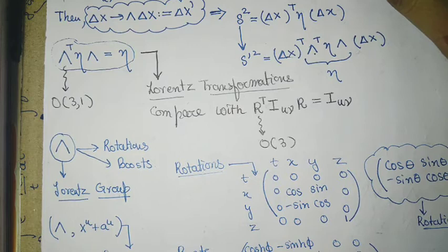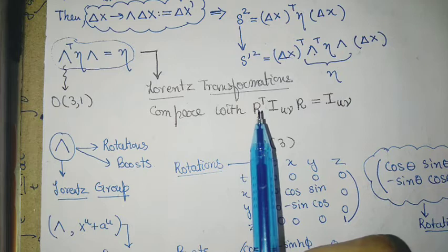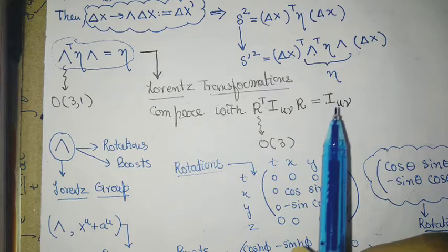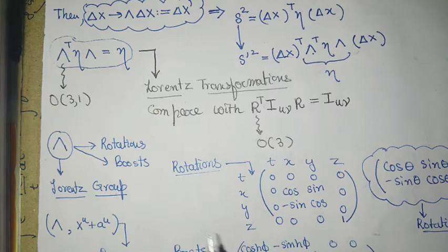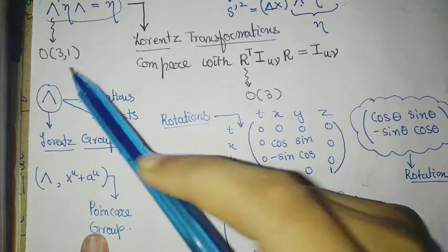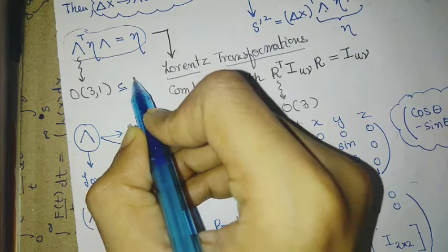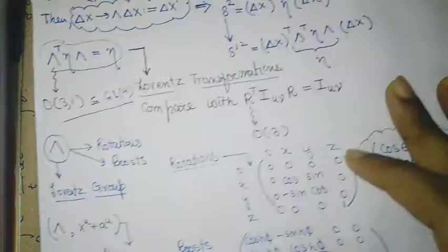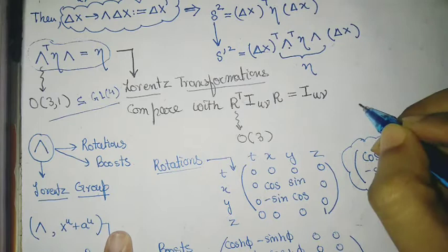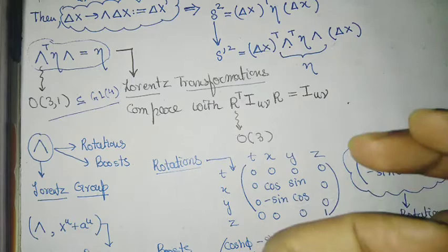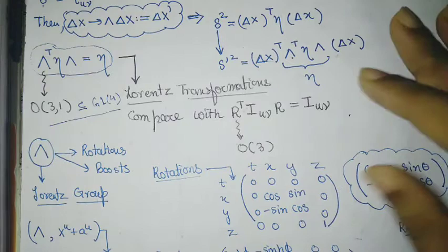Just like rotations in R3 about a fixed axis form the orthogonal group O(3), the Lorentz transformations also form a group. This group is a subset of the general linear group GL(4). The fact that they come into play over a spacetime manifold has to do with the underlying structure of bundle maps and how two different observers, when they meet at a point, have frame references that change with respect to each other.